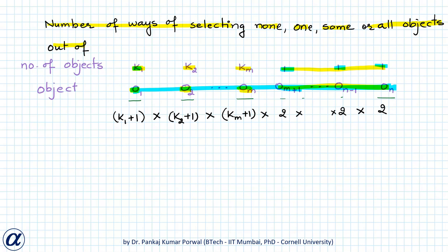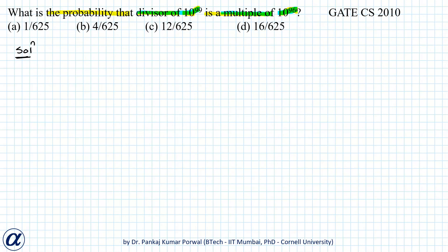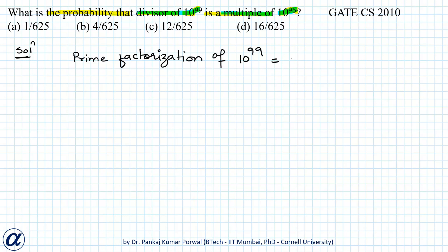With that background, let us move to our question. First, let us find the total number of divisors of 10 to the power 99. For that I need to find the prime factors of 10 to the power 99, which is straightforward. The prime factorization is 2 to the power 99 into 5 to the power 99, since 10 has only two prime factors: 2 and 5.